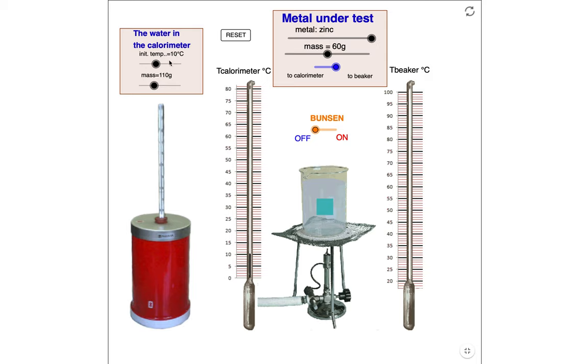Inside this calorimeter we have water and we can adjust the amount of water that we have inside the calorimeter by using the slider. We can also adjust the temperature of that water inside the calorimeter. That would be the initial temperature of the water for our particular experiment.